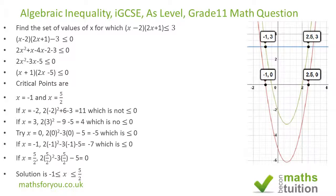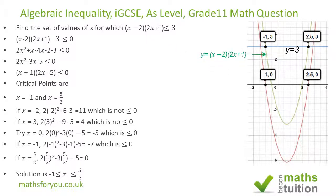Now for the graphical method. I've drawn four graphs here. First, the graph of y = 3, shown as a solid line because of the equals sign. Next, the graph of y = (x − 2)(2x + 1) — that's the green graph. Then the graph of y = 2x² − 3x − 5 — that's the red graph. And lastly, the graph of y = 0, which is effectively the x-axis.